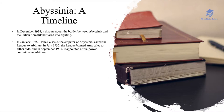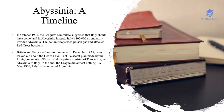For a more detailed timeline of the Abyssinian Crisis: in December 1934 there was a dispute about the border between Abyssinia and Italian Somaliland which led to fighting. In January 1935 Haile Selassie asked the League to arbitrate. In July 1935 the League banned arms sales to either side, and in September 1935 appointed a five-power committee to arbitrate. In October 1935 the League's committee suggested that Italy should receive some land in Abyssinia; however, Italy's 100,000-strong army invaded Abyssinia instead, using poison gas and attacking Red Cross hospitals. Britain and France refused to intervene. In December 1935 news leaked of the Hoare-Laval Pact — a secret plan to give Abyssinia to Italy. In the end the League almost did nothing, and by May 1936 Italy had conquered Abyssinia.